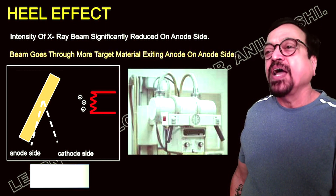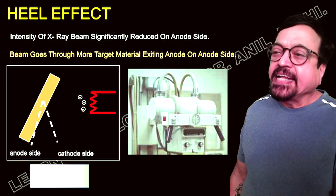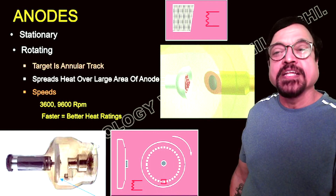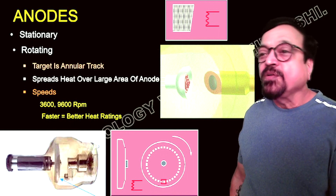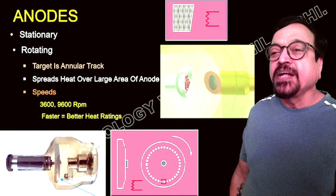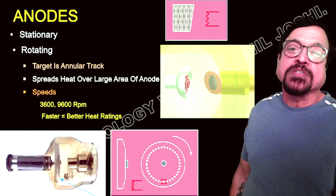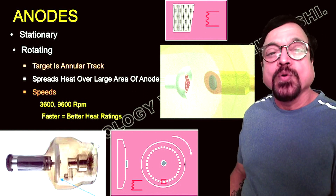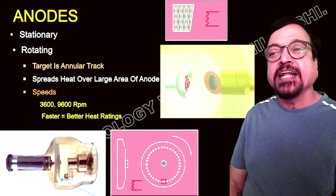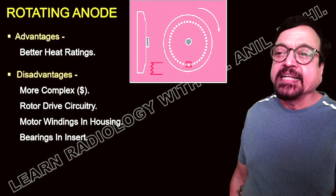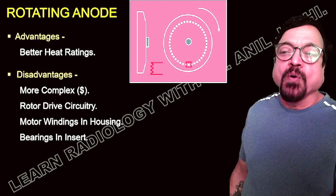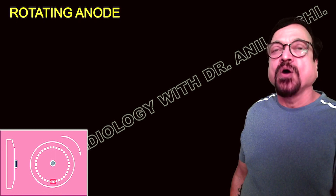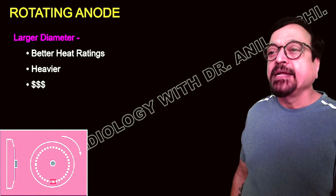The heel effect refers to the fact that the intensity of the x-ray beam is significantly reduced on the anode side, because the beam goes through more target material on that side. Anodes are either stationary or rotating. Stationary anodes are used in dental tubes; rotating anodes are used in routine radiographic departmental tubes. In a rotating anode tube, the target is an annular track that spreads heat over a larger area, allowing better tube ratings, more successive exposures, and higher mA. The anode rotation speed is between 3,600 and 9,600 RPM. Advantages of rotating anodes include better heat rating; disadvantages include more complex circuits, more complicated housings and bearings, larger and heavier design, and greater cost.